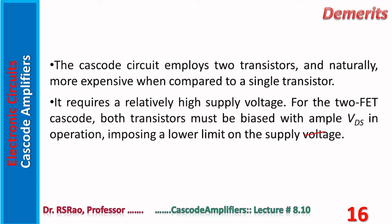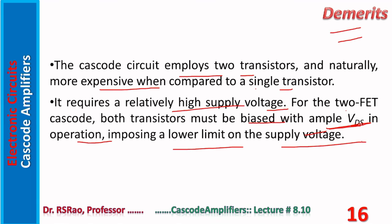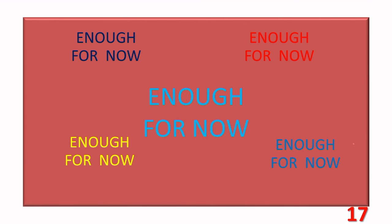Cascodes also have certain demerits. The cascode employs two transistors and is naturally more expensive than a single transistor. It requires a relatively high supply voltage. For a two-FET cascode, both transistors must be biased with ample VDS in operation, imposing a lower limit on the supply voltage. This means lower supply voltages are not suitable for biasing cascodes — cascodes demand higher supply voltages.